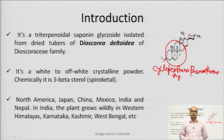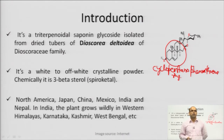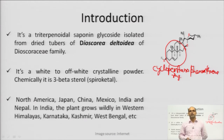The plant belongs to the family Dioscoreaceae, which is especially known for tuberous roots. In Hindi, Dioscorea deltoidea is also known as yam in English. It is a white to off-white crystalline powder, and chemically it is a 3-beta sterol or spiroketal. As far as geographical distribution is concerned, it is distributed throughout the world, especially in North America, Japan, China, Mexico, India, and Nepal. In the Indian subcontinent, the plant grows wildly in the Western Himalayas, Karnataka, Kashmir, and West Bengal.